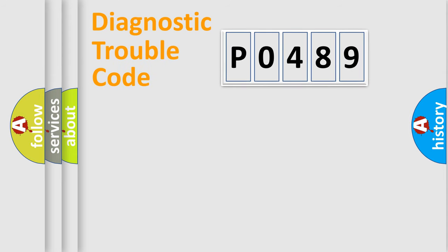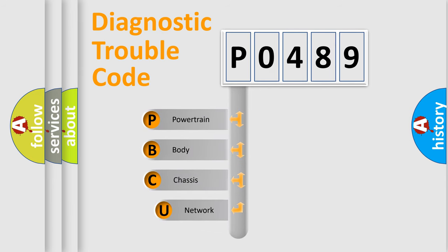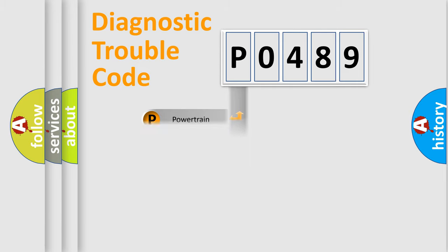Let's look at the history of diagnostic fault code composition according to the OBD2 protocol, which is unified for all automakers since 2000. We divide the electric system of an automobile into four basic units: Powertrain, Body, Chassis, and Network. This distribution is defined in the first character of the code.